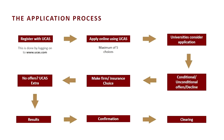Starting with the application process: you'll be registering with UCAS to make your application. All applications to undergraduate programs are made via UCAS. If you're thinking about progressing to university in September 2021, you'll be able to send your application from September 2020, but the window to start completing your application is actually from May 2020.